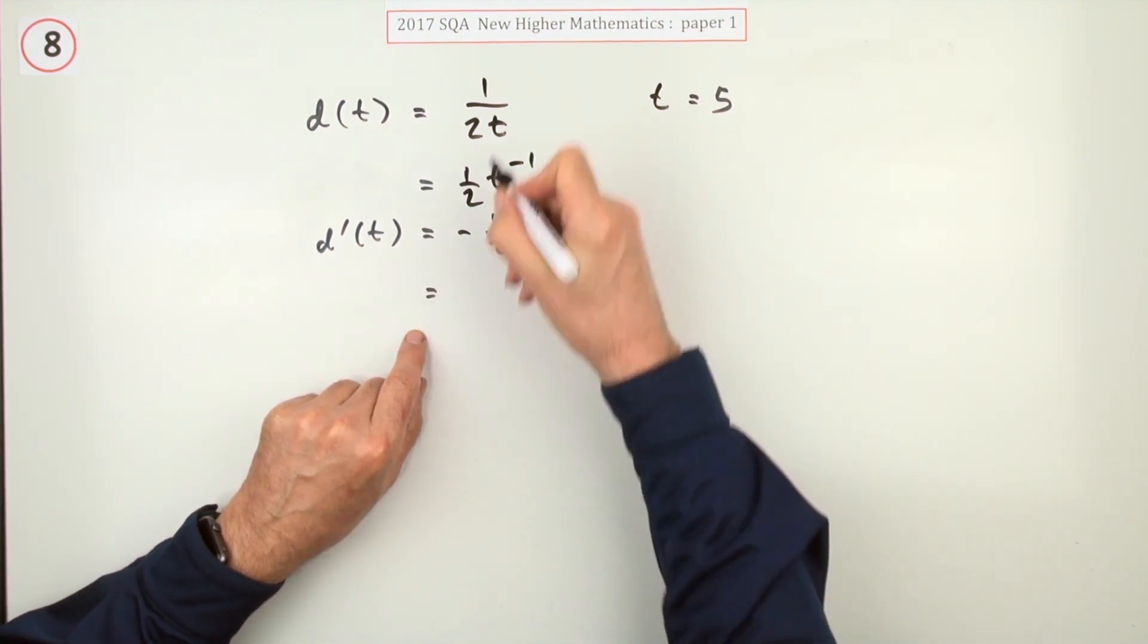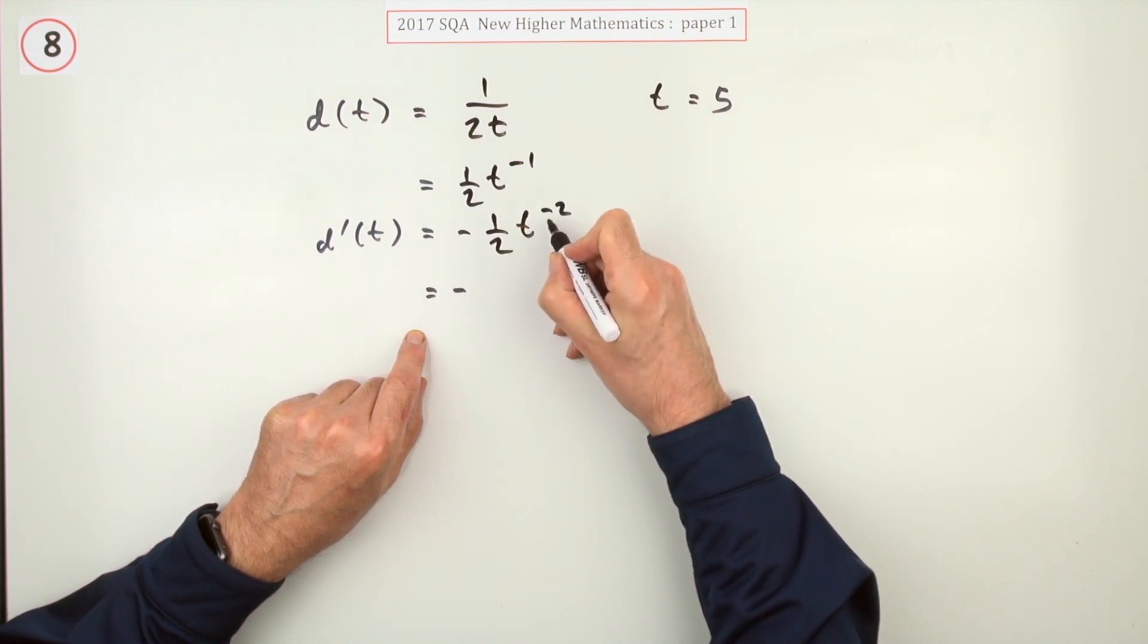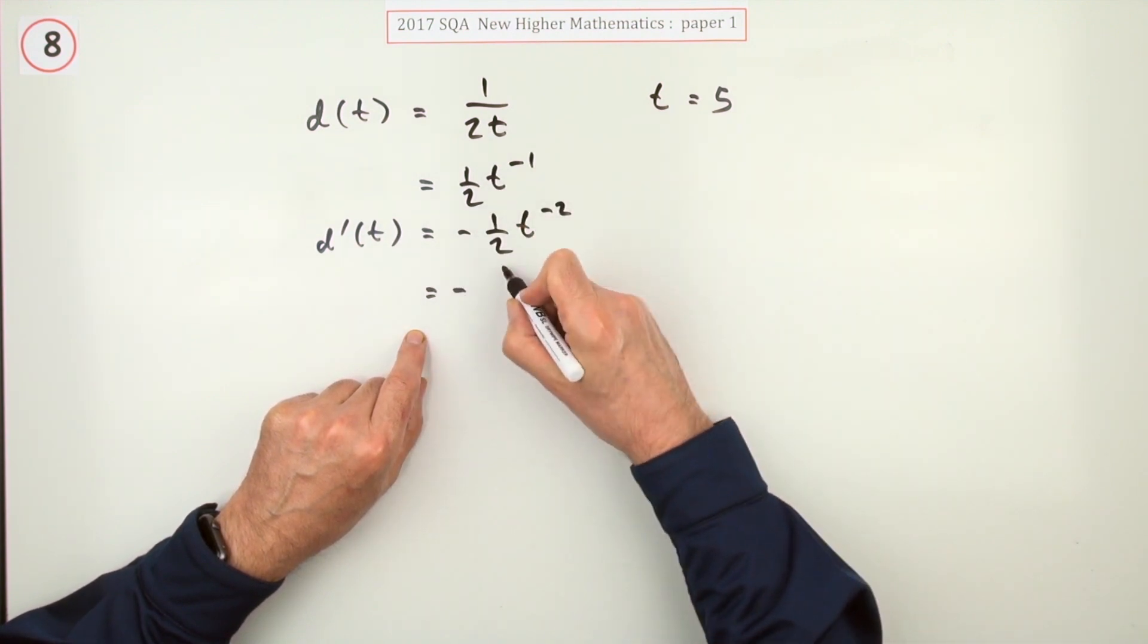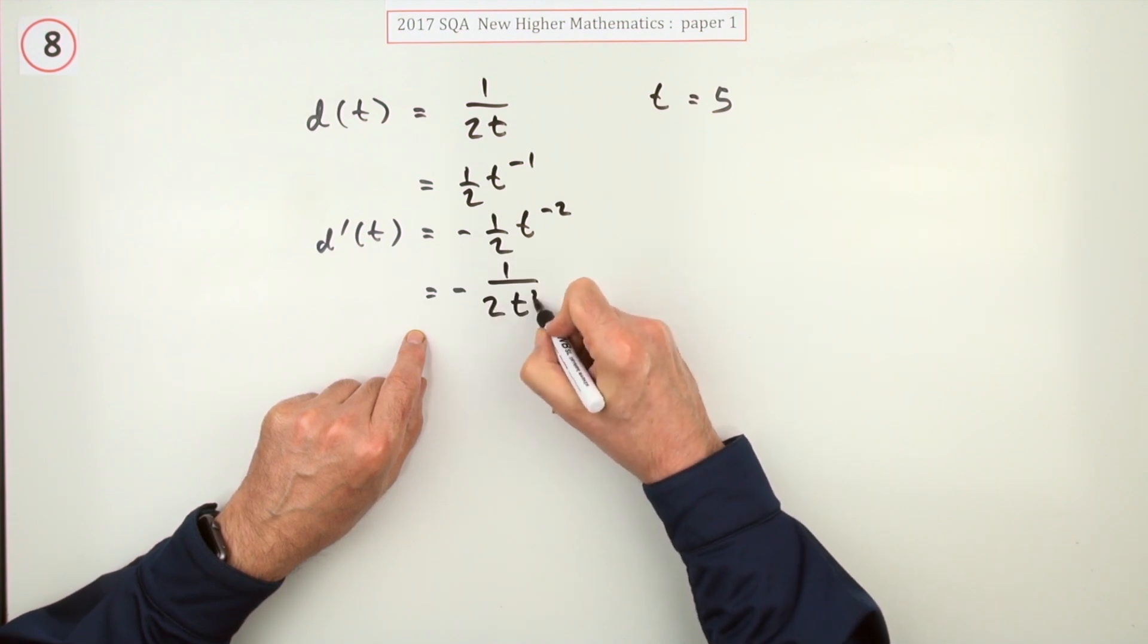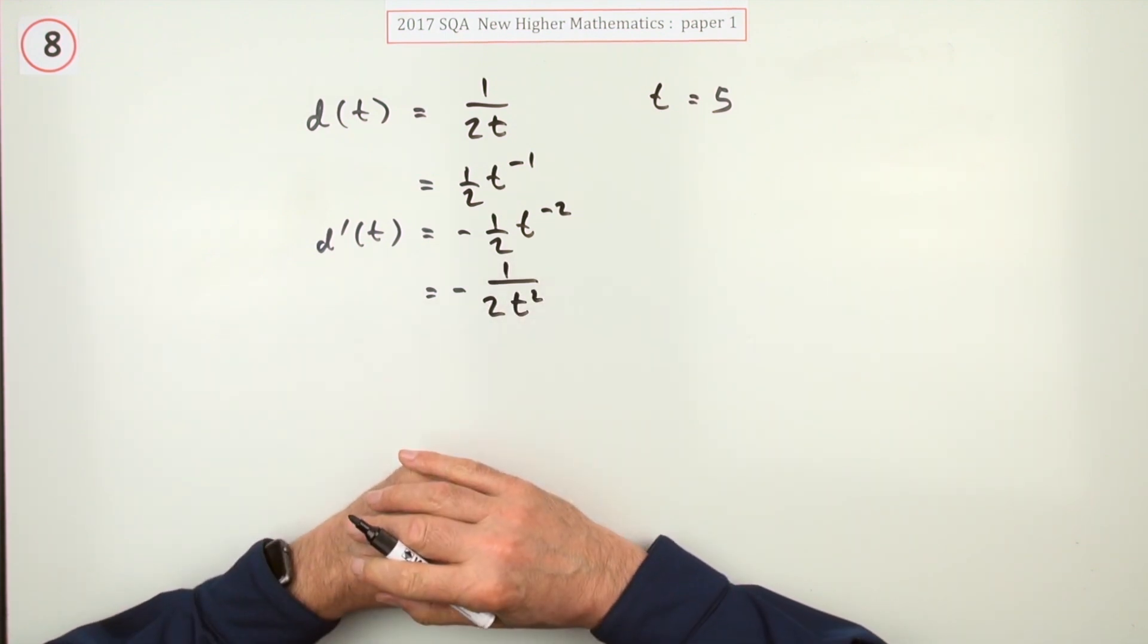Now you could just put the number in just now. I think I'll just put that back the way I found it. So that t to the negative 2 means it's a t squared underneath, so it can rejoin that 2. So it's negative 1 upon 2t squared.